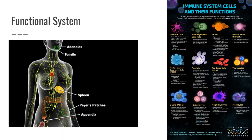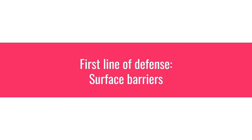The immune system is considered a functional system rather than an organ system in an anatomical sense. Like the muscular system is all the muscles, or the skeletal system is all the bones — but the immune system is spread-out molecules and immune cells that live throughout the body. They share a common function rather than a common structure, hence: functional system.